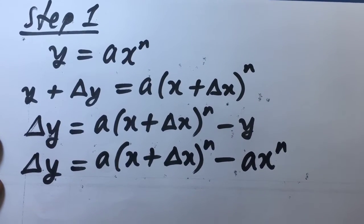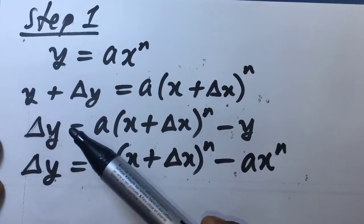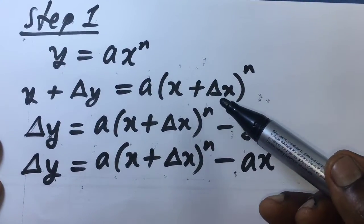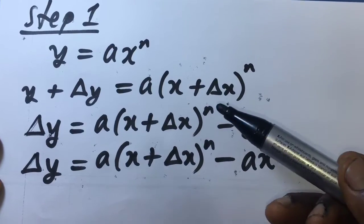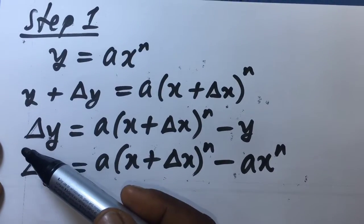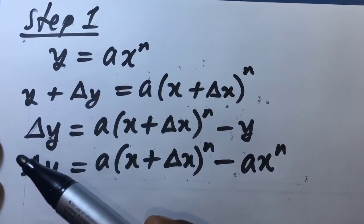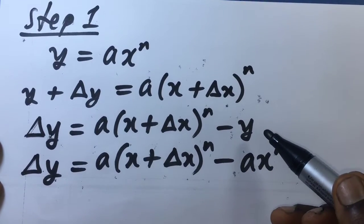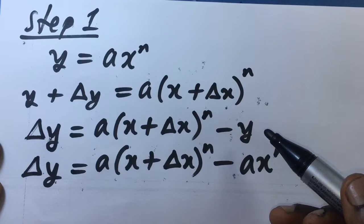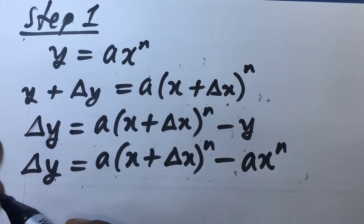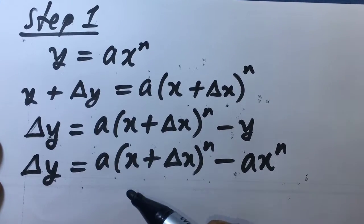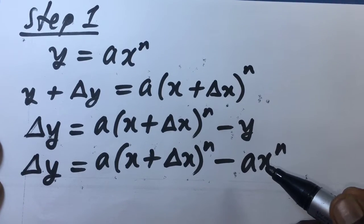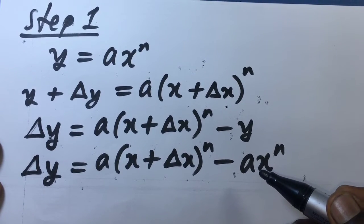The first step was to increase y by delta y, noting that this must have come from an increment in x, and then making delta y — the infinitesimal change in the dependent variable — the subject of the formula. That gives us: delta y equals a(x + Δx) raised to the power n, minus ax raised to the power n.